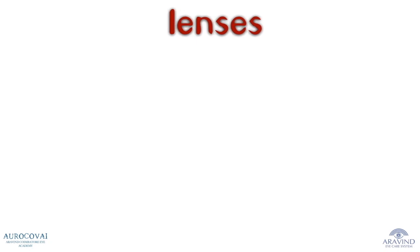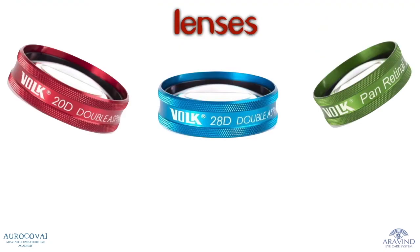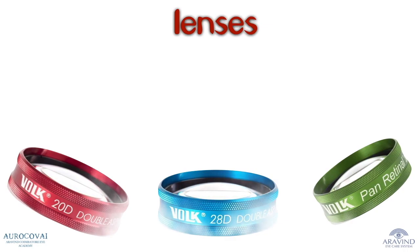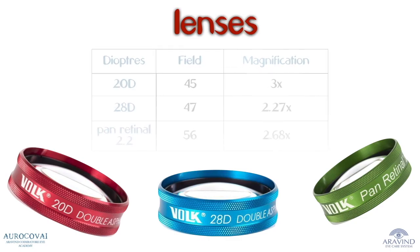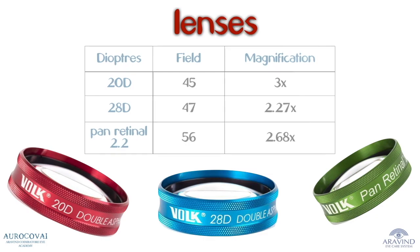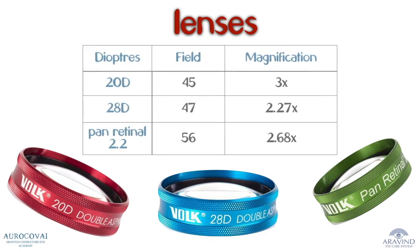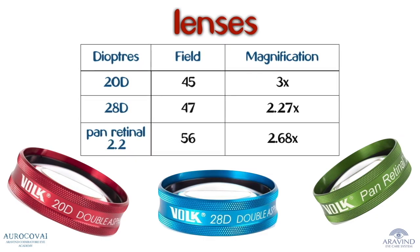Used in conjunction with the indirect ophthalmoscope are plano-convex condensing lenses. The most commonly used one is the 20 diopter lens, which has a magnification of three times and a field of 45 degrees. The 2.2 pan retinal lens and the 28 diopter lens are other commonly used lenses. The 28 diopter lens is ideal for an older population with small pupils and for neonates undergoing screening for retinopathy of prematurity.